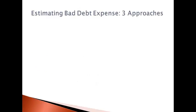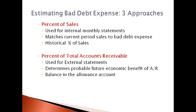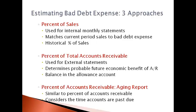There are three approaches that accountants commonly use to estimate bad debt expense. The percent of sales approach is used primarily for internal monthly financial statements. This approach uses the past history of write-offs as a percent of sales to directly match bad debt expense to sales in a current period. The percent of total accounts receivable approach is used for external financial statements and is more concerned about reporting a reliable probable future economic benefit related to accounts receivable by estimating the balance that needs to be in the allowance account. The percent of accounts receivable using an aging report is similar to the percent of total accounts receivable; however, the length of time an account is past due is considered when determining the total that should be in the allowance account.